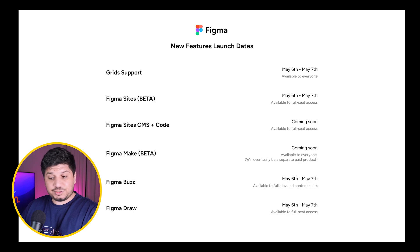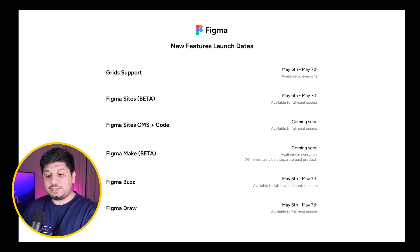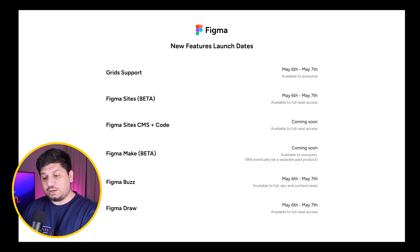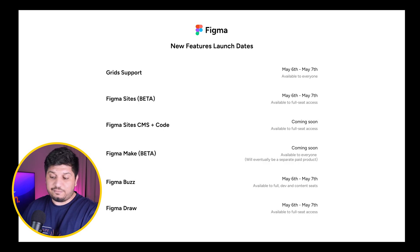Now about release dates and who will get access. Grids are available to everyone, including free plan users — just update Figma. Figma Sites is still in beta, launching on May 6th or 7th, and only people with a full seat will have access. Figma Sites CMS and code integrations are coming soon with no date announced — possibly weeks or months — and full seat owners will have access.